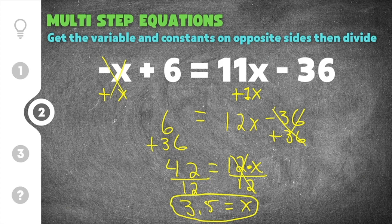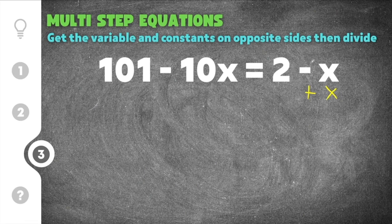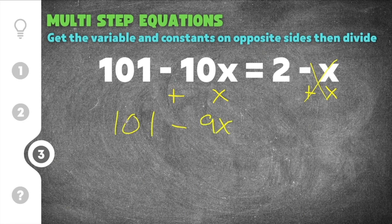The last problem gives us 101 minus 10x equals 2 minus x. The first step is to get the variables together. We can add 10x to the right side or add 1x to the left — it doesn't matter which side you choose. I'm going to add 1x to the right so those x terms cancel. Whatever you do to one side you have to do to the other, so I add 1x to both sides. Negative 10x plus x is negative 9x, and 101 comes straight down, giving us 101 minus 9x equals 2.